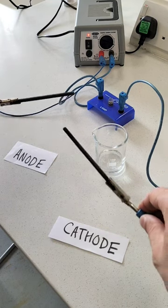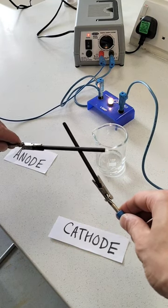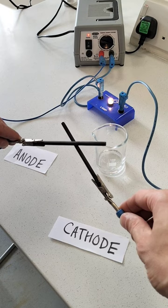First, you're going to want to check your electrolytic cell is working properly. Touch the electrodes together and it should light the bulb because a current is flowing.